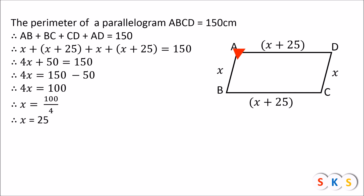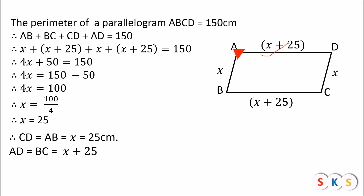So we got the value of x, that is 25. Therefore, AB equals CD equals x equals 25 centimeters. Similarly, AD and BC are both equal to x plus 25. Substituting the value of x: 25 plus 25 equals 50 centimeters. So we got the lengths of all four sides of this parallelogram: AB and CD are 25 centimeters each, and AD and BC are 50 centimeters each.